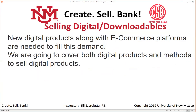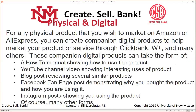We're going to cover both digital products and methods to sell them. For any physical product you wish to market on Amazon or AliExpress, you can create a suite of companion digital products to help market your product through ClickBank, Warrior Plus, and many other options. These can take the form of a how-to manual, a YouTube channel video, a blog post reviewing similar products, a Facebook fan page post, or an Instagram post showing you using the product.